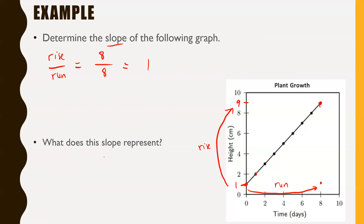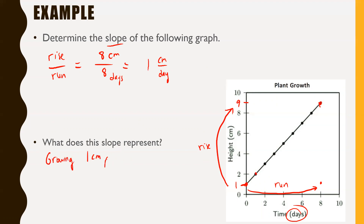The next question: what does this slope represent? Our rise was in centimeters and our run was in days, so we have 8 centimeters over 8 days, which equals 1 centimeter per day. So a slope of 1 centimeter per day tells us this plant is growing one centimeter per day — the slope represents the rate at which height is changing over time, meaning the rate of change of my dependent variable over my independent variable.